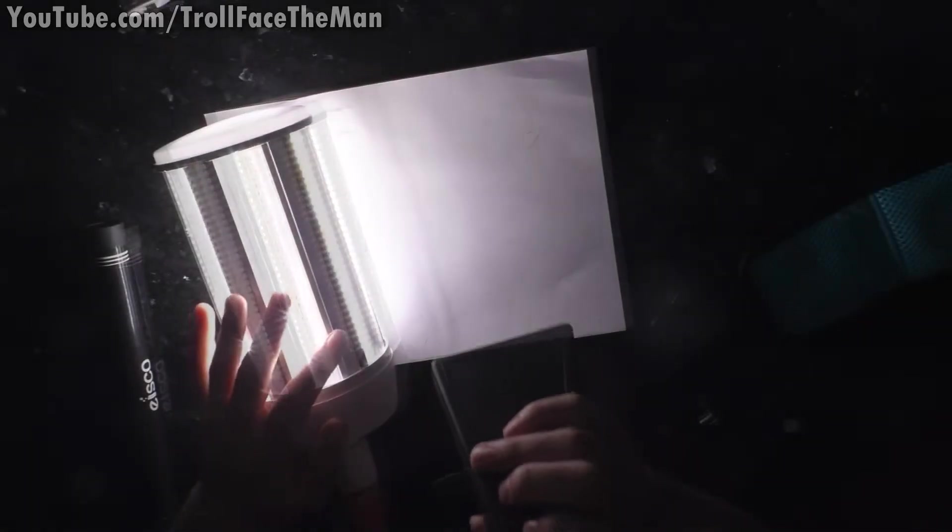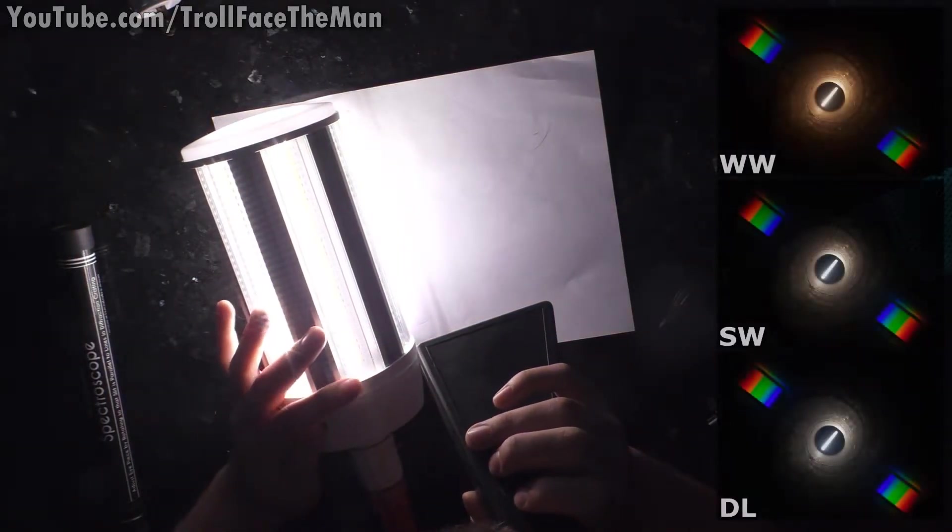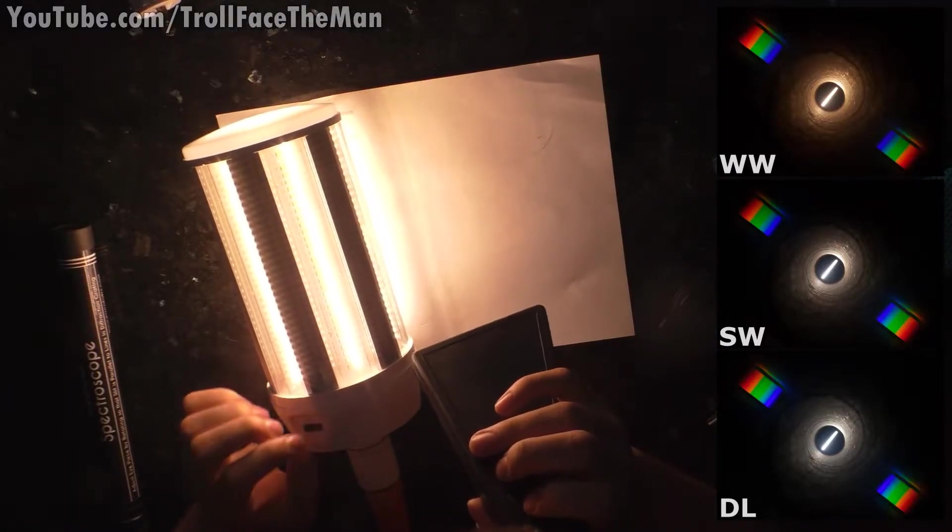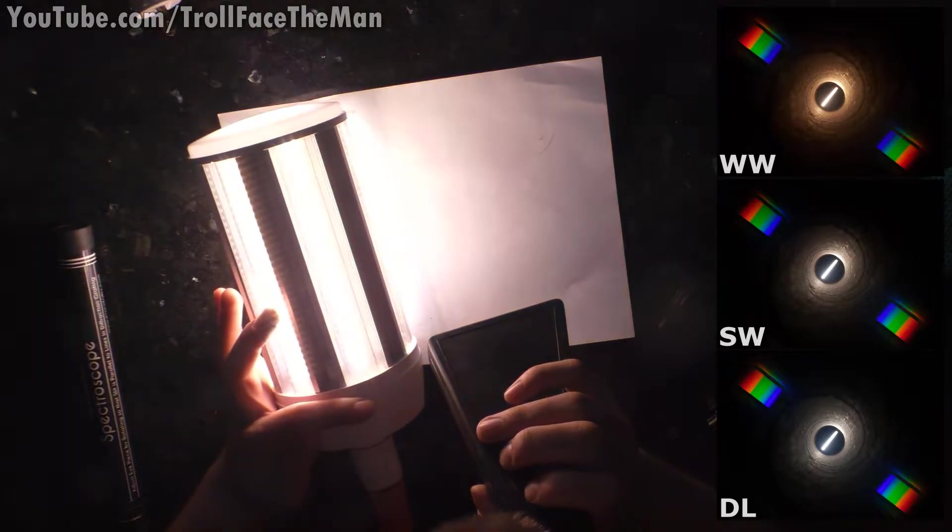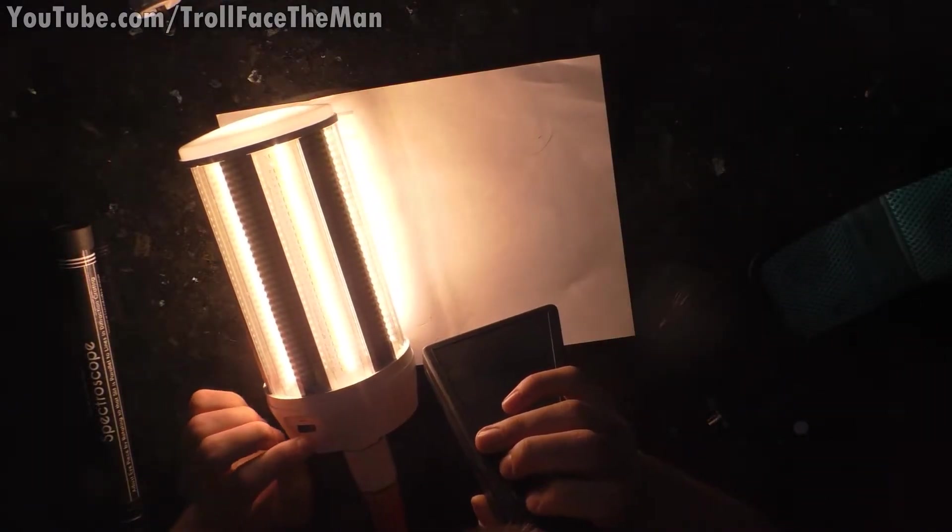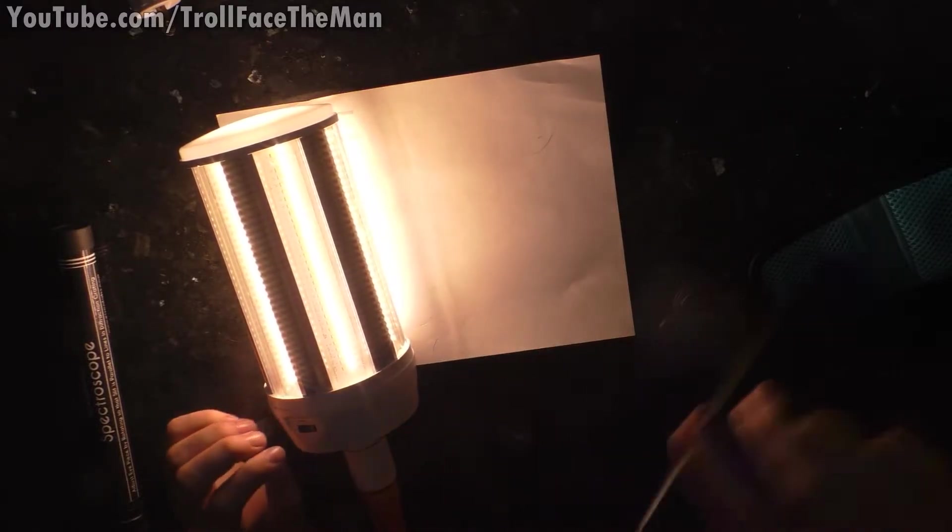I'm going to take a look with my own spectroscope real quick to see. The truth of the matter is that when I'm looking at this, it actually has a really good color. Actually has a really good color spread here. I'm seeing a very sort of smooth rainbow, not a whole lot of over-representation in any spectrums. It just actually looks fairly good.